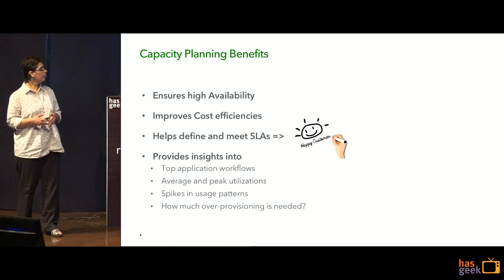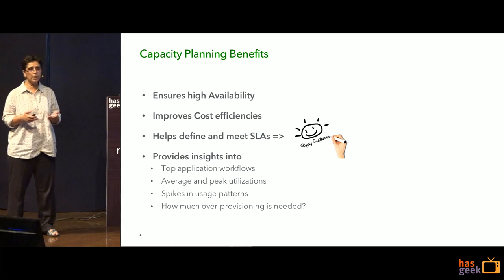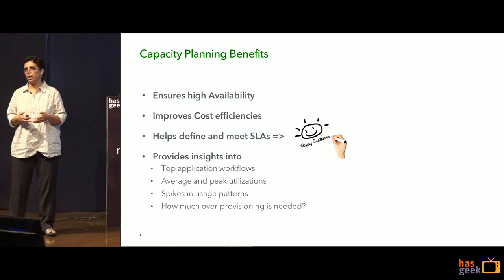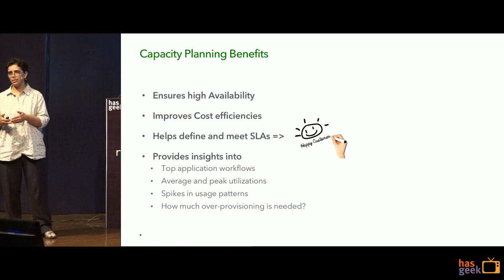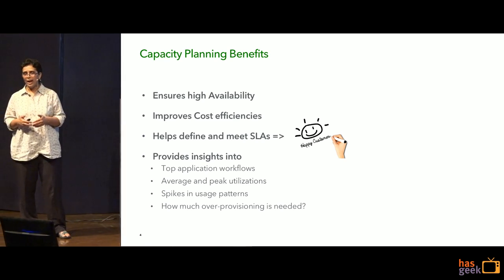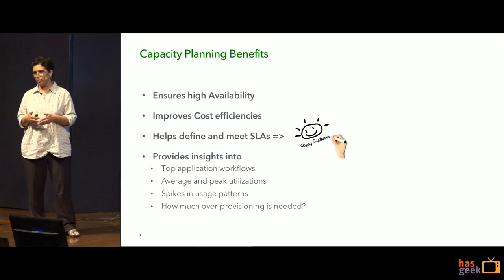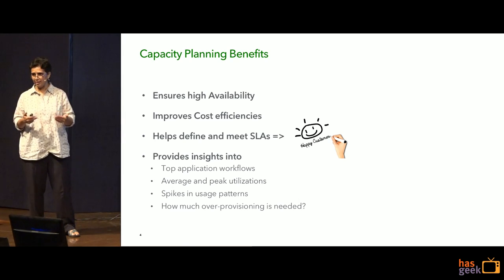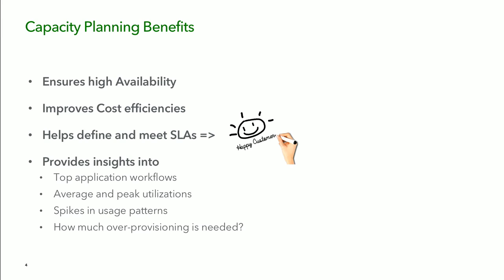Some other benefits of doing a capacity planning exercise are that it provides very valuable inputs and insights into your top application workflows. I'm sure you're all familiar with the 90-to-10 rule, wherein 90% of your customers are using 10% of your workflows. This exercise helps you drill down on those top 10 workflows to make sure they're really fine-tuned. It also helps you look at other workflows which may not be as critical but which may impact your top workflows, giving you a proper bird's eye view. It also helps you understand your average and peak utilization and any spikes in your usage patterns.